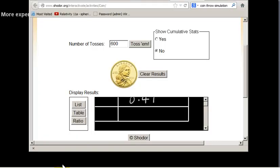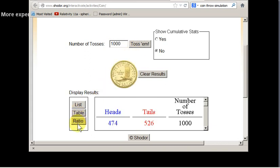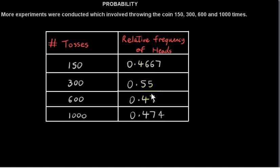Finally, let's look at 1,000 tosses. For this, we get 0.474. Well, we can see that these numbers are floating around 0.5.